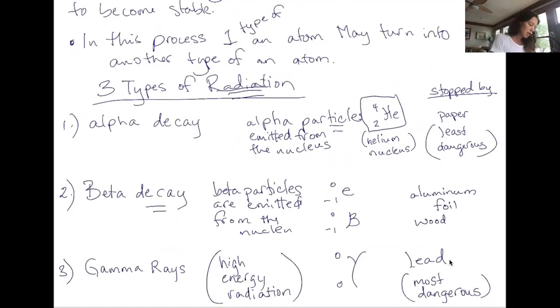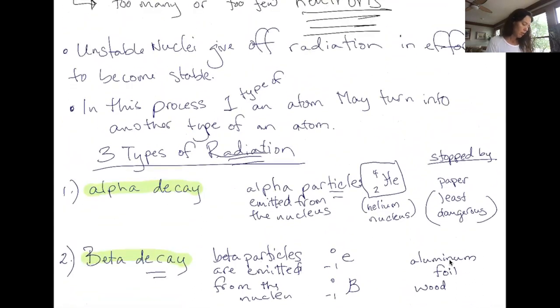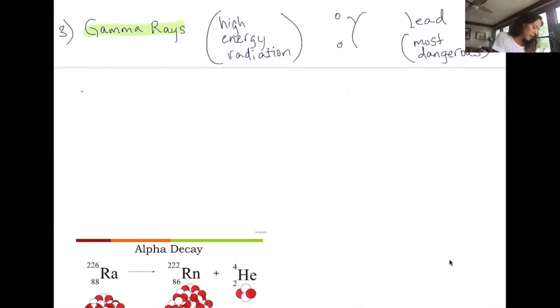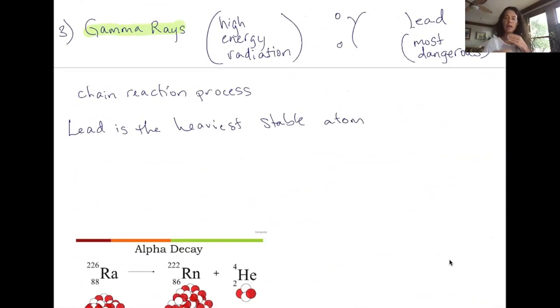So these are the three types of radiation we will discuss in terms of what nuclei give off in the effort to become stable. This is often called a chain reaction process. And it is true that lead is the heaviest stable atom. So many of the heavier atoms decay and continue to decay until they get to a nuclei similar to that of lead's or like that of lead's.